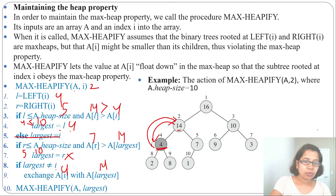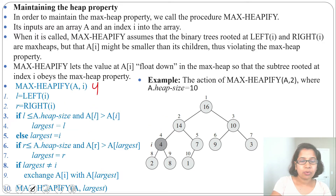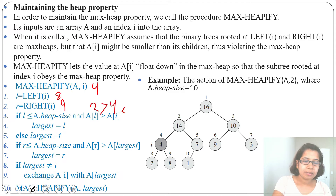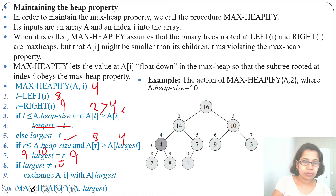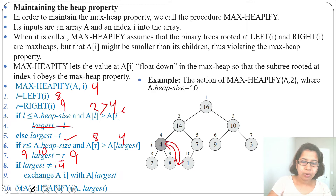After the exchange we recursively call max heapify on A and largest, which is 4. Now i equals 4, its left child index is 8 and right child index is 9. Is 8 less than 10? Yes. A[L] is 2, is 2 greater than 4? No, so largest stays as i. For the right child: is 9 less than 10? Yes. A[R] is 8, is 8 greater than A[largest] which is 4? Yes, so largest becomes 9. Since largest is not equal to i, we exchange A[4] with A[9] — 4 and 8 are swapped.